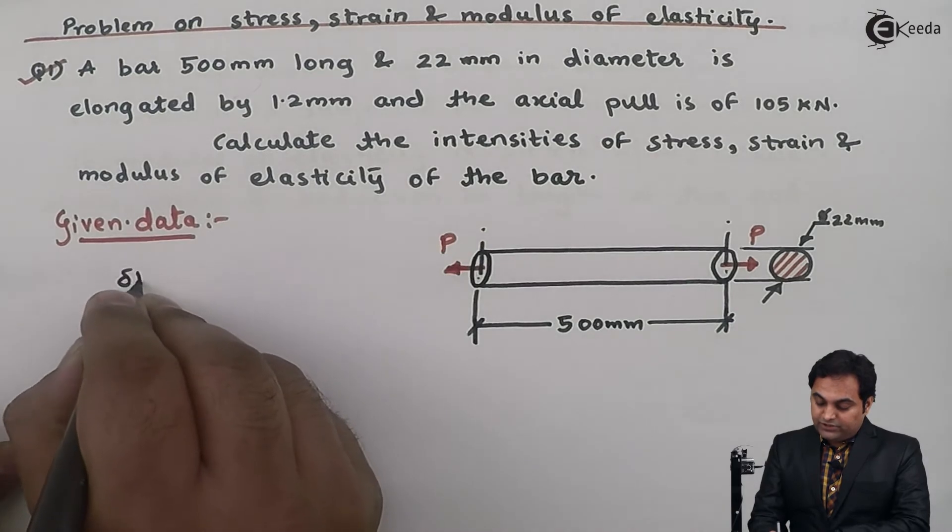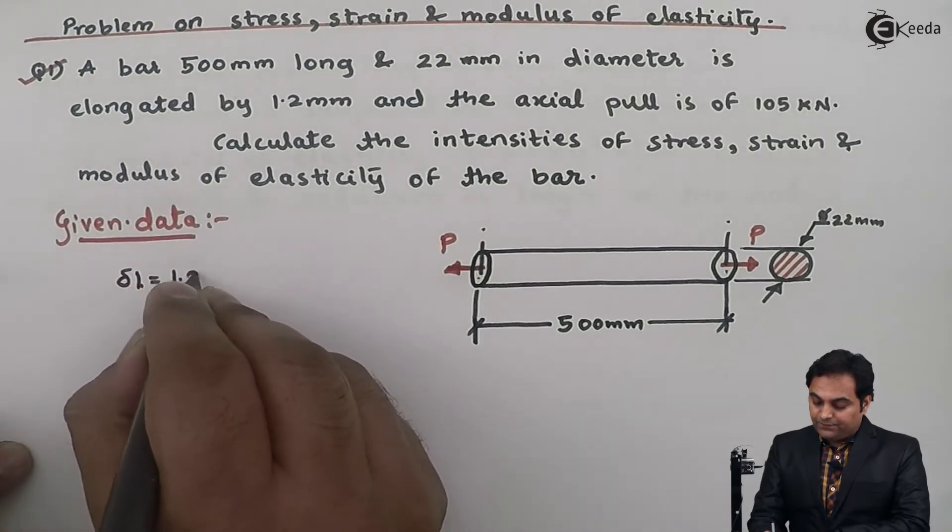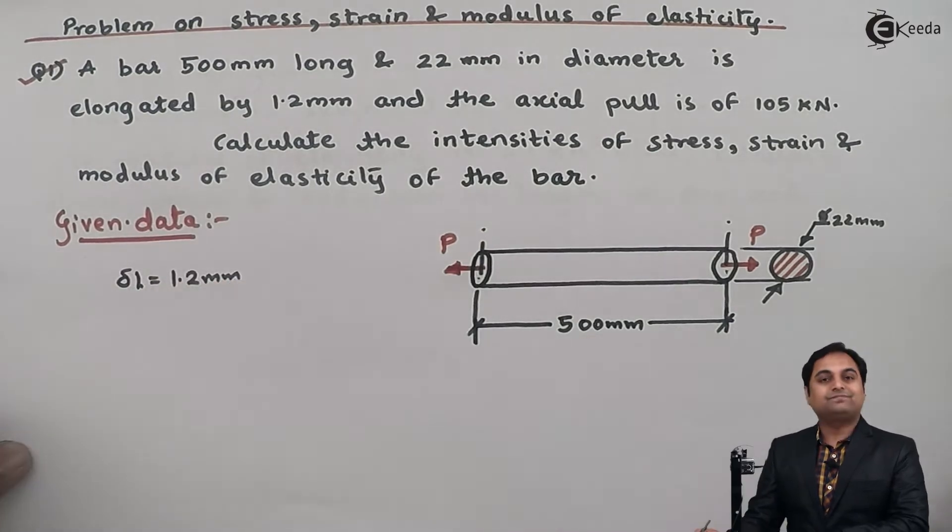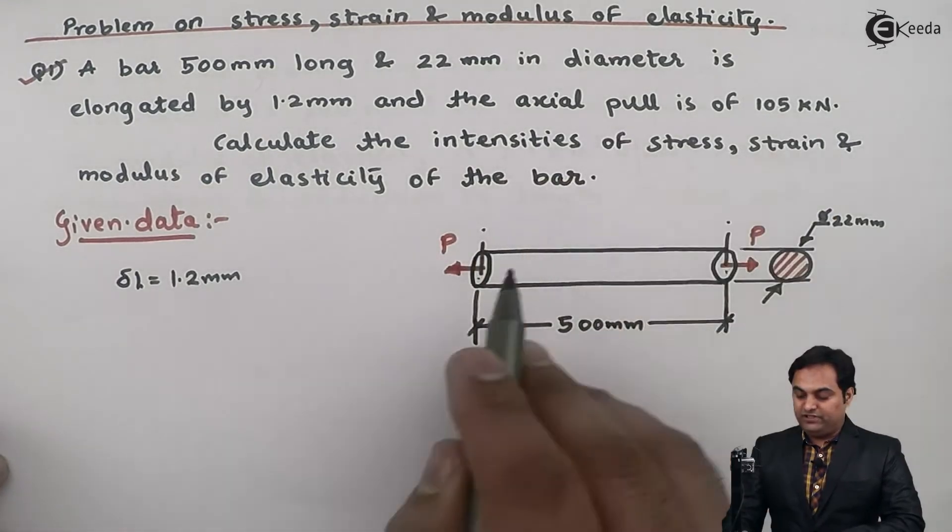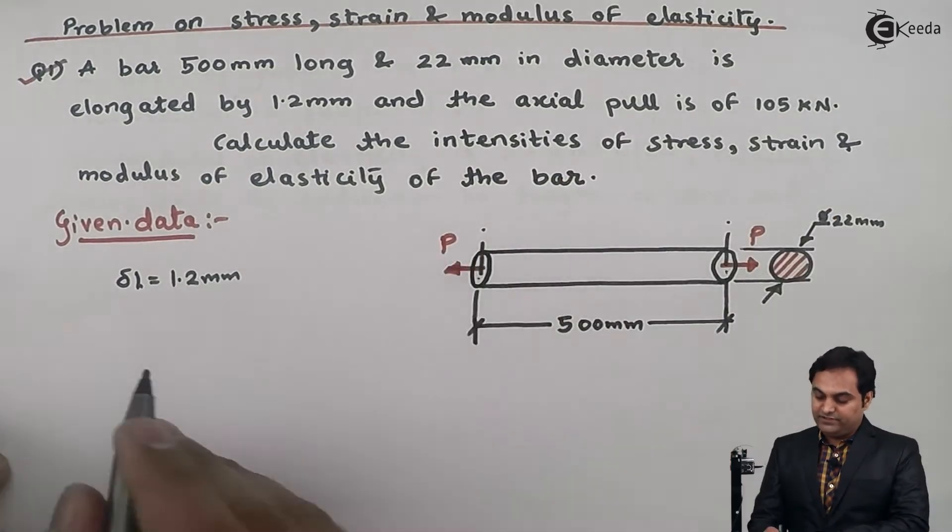And the axial pull is of 105 kilonewton. Value of P is given as 105 × 10³ Newton.